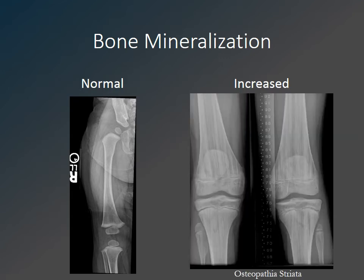Other disorders of increased bone mineralization can be seen with the sclerosing bone dysplasias, such as osteopoikilosis, melorheostosis, or osteopathia striata.